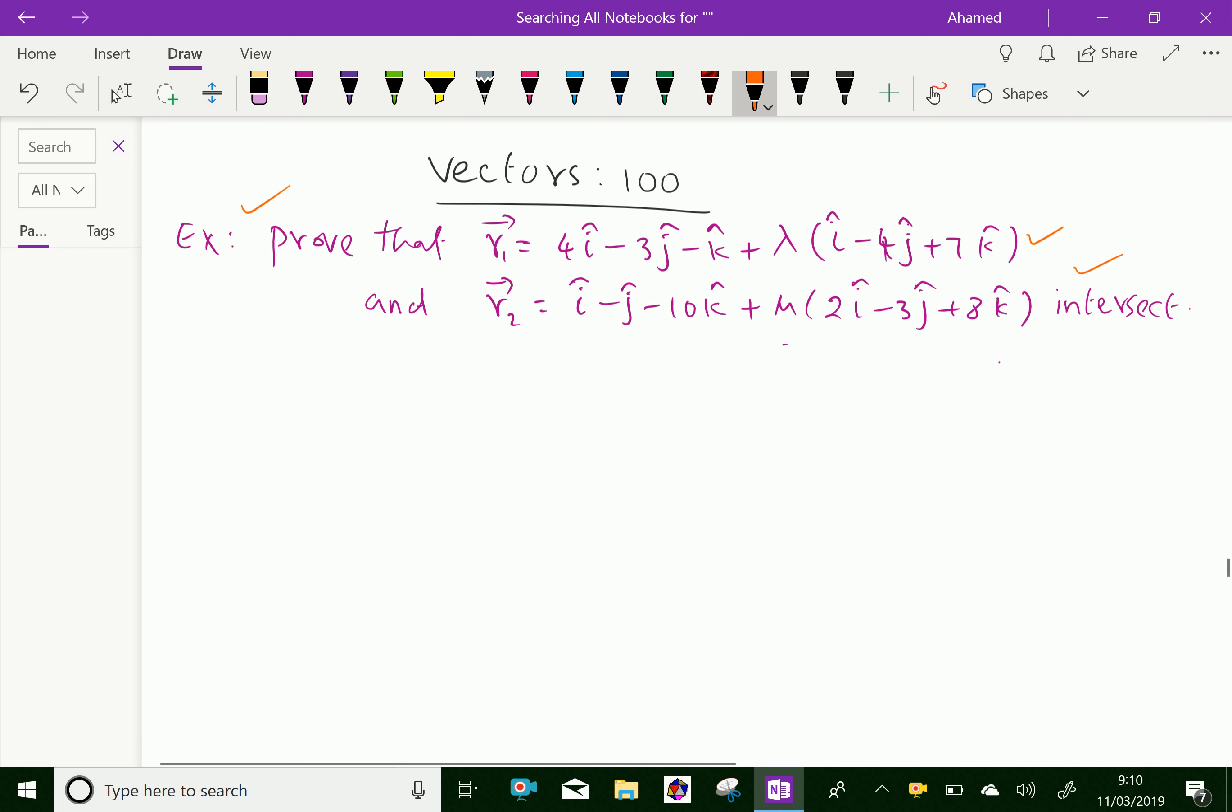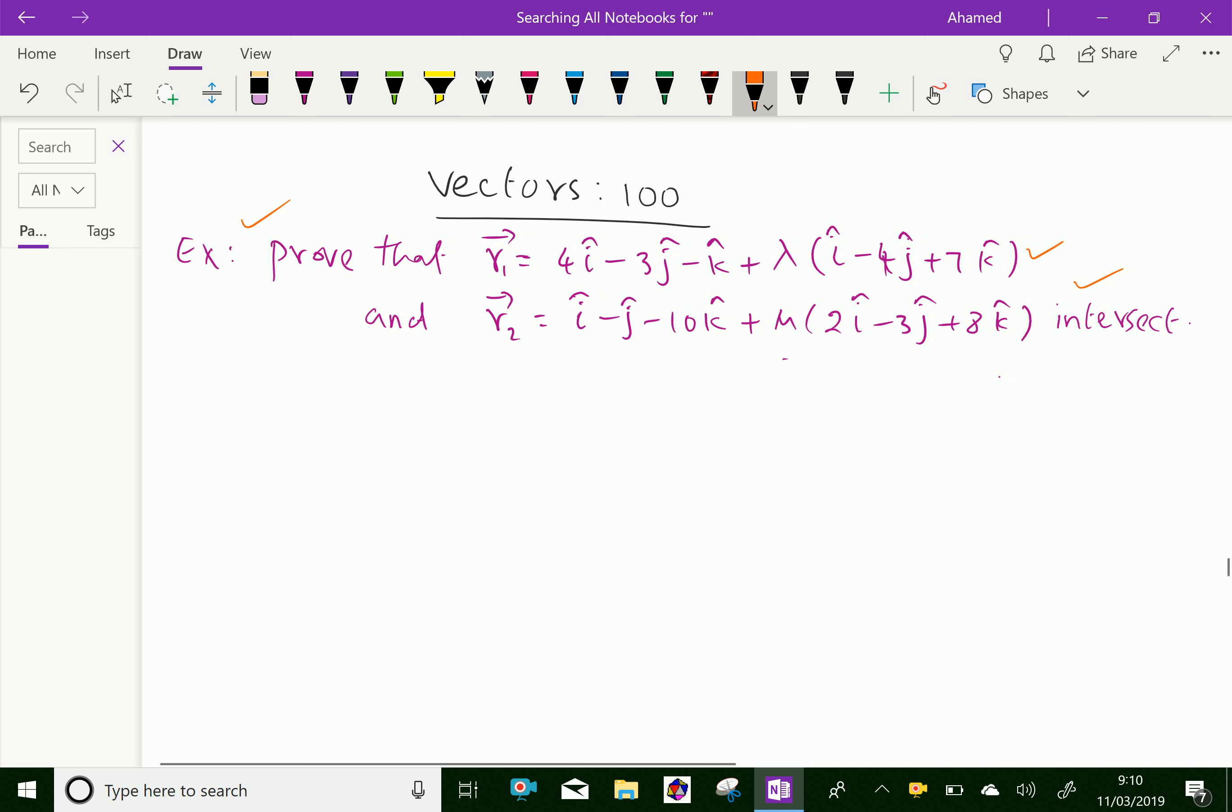Let the first line, that is r1 vector equal 4i minus 3j minus k plus lambda into i minus 4j plus 7k. Let it be equation 1.